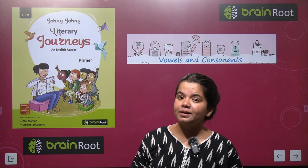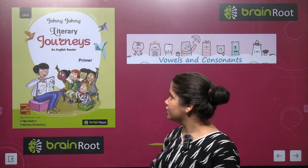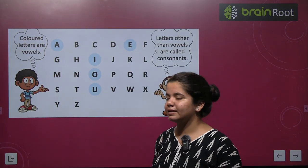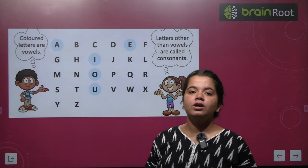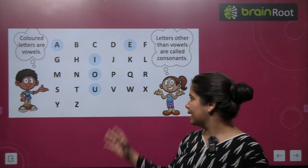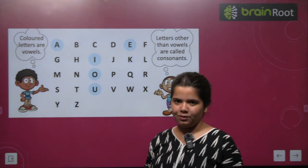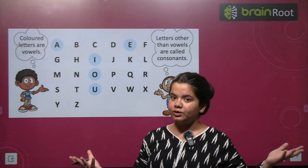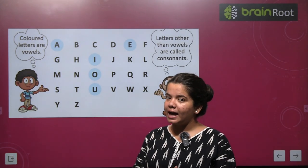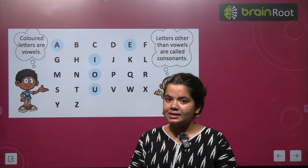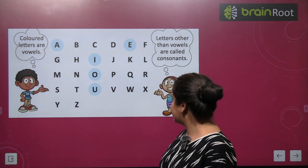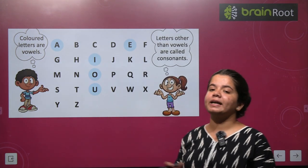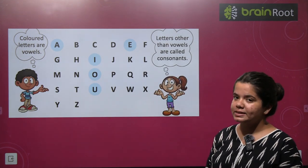Let's learn what we have to do in this chapter. First of all, you can see A to Z, right? We have to study A to Z in the first chapter. We have to study capital letters and small letters. Now we will study vowels.